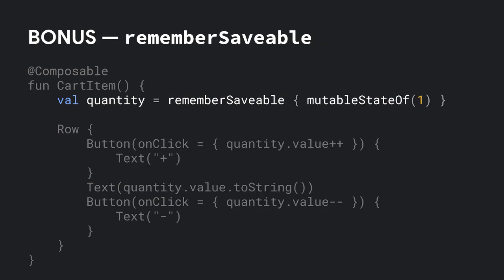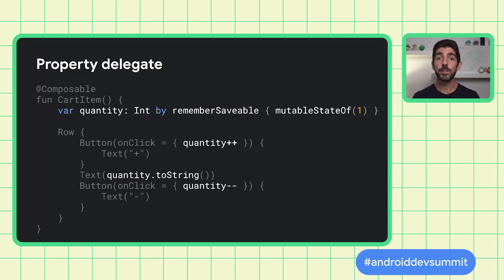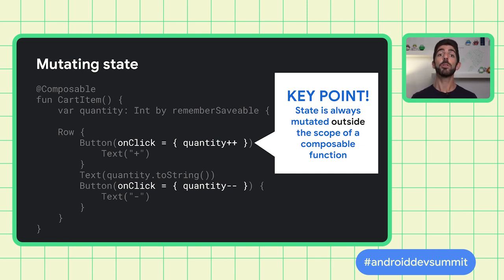As a bonus, Compose also offers RememberSaveable. It behaves similarly to Remember, but the stored value will survive activity and process recreation — a good way for UI data to survive configuration changes. RememberSaveable makes sense for UI states like item quantities or the selected tab, but not for transient animation state. You can also use property delegates with the state APIs using the by keyword — a nice way to avoid accessing the value property every time. You should only mutate state outside the scope of a composable function, because composables can run frequently and in any order.